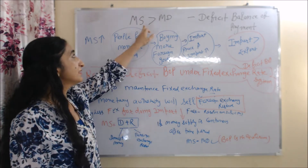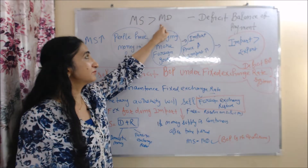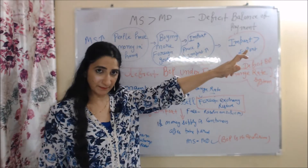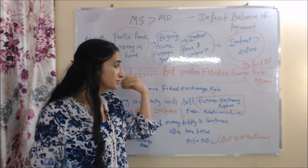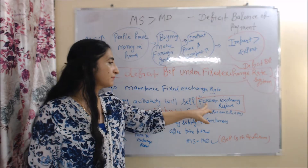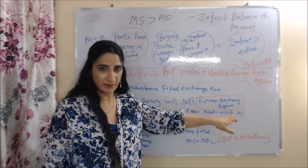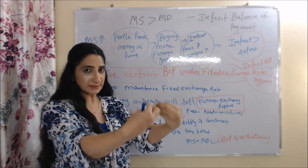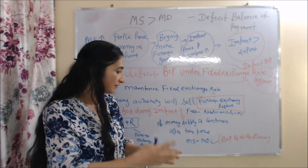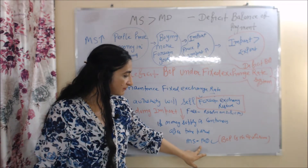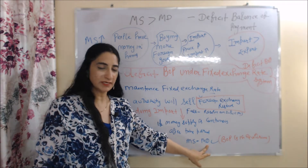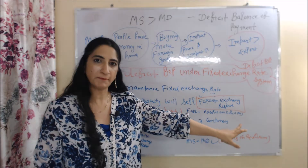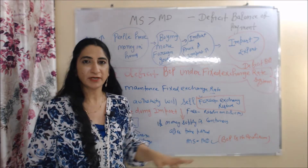So here we see: when money supply is more than money demand, we have a deficit balance of payment. We solve this problem by selling foreign exchange reserves, because after a certain time period, our money supply will equal money demand, and we will have equilibrium balance of payment.